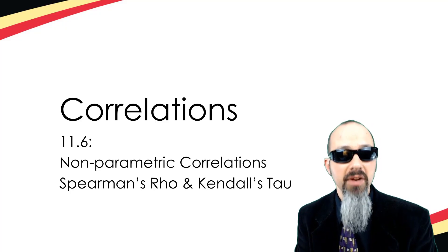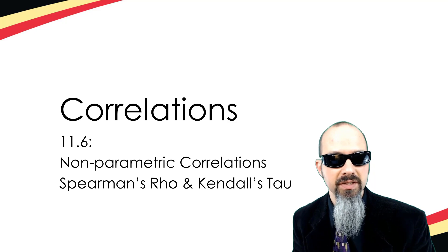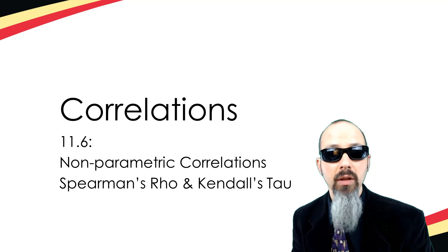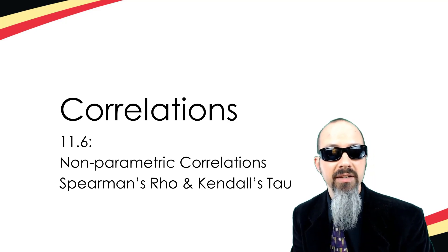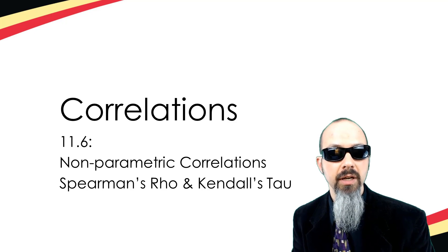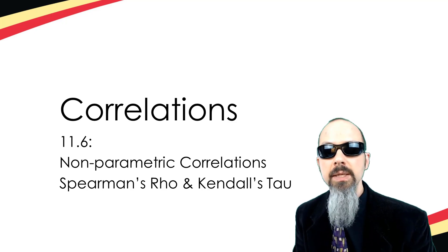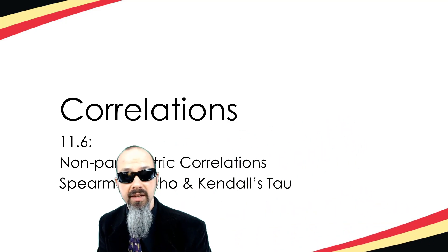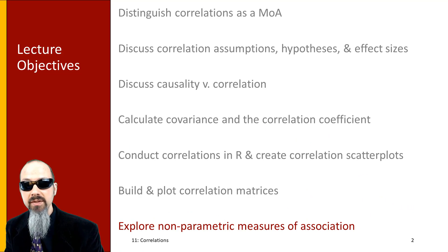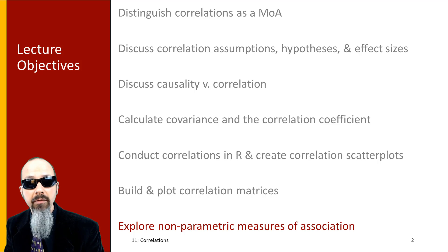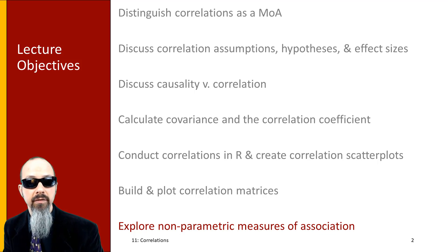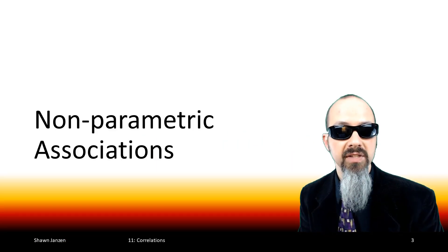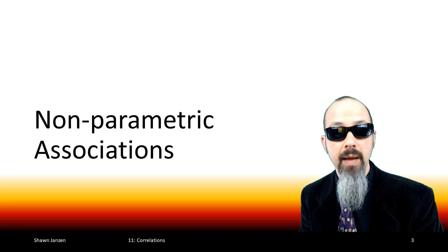Hey Data Junkies, welcome back to another episode of Statistics with Sean Janssen. We're still on the correlations adventure and now we're on to topic area six where we're going to start talking about non-parametric correlations, specifically Spearman's Rho and Kendall's Tau. This is going to start in the wrap-up section of this module. We've already talked about a wide variety of statistical topics as regards to correlations, from how to calculate covariance and correlations to plotting them and a bunch of other stuff. So now we're going to focus on the non-parametric and what this happens to mean.